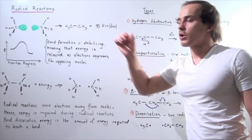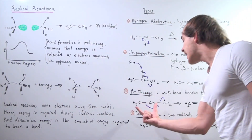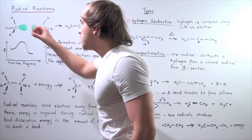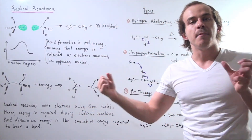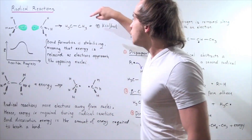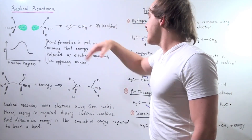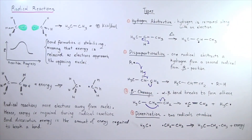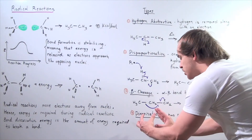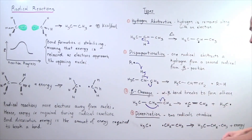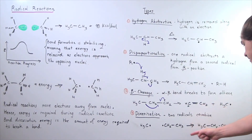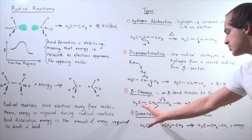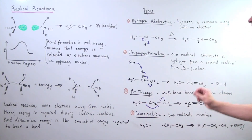The fourth type of radical reaction is dimerization. In these reactions, radicals combine their electrons to form neutrally charged alkanes. For example, with a methyl and an ethyl radical, these electrons approach the opposing nuclei, energy decreases, energy is released, and we have a more stable product with a new bond. This dimerization reaction is exothermic.